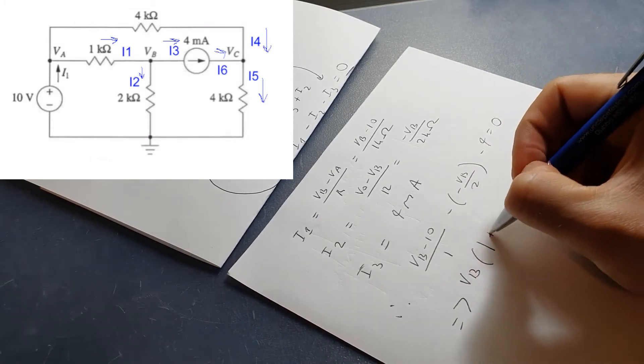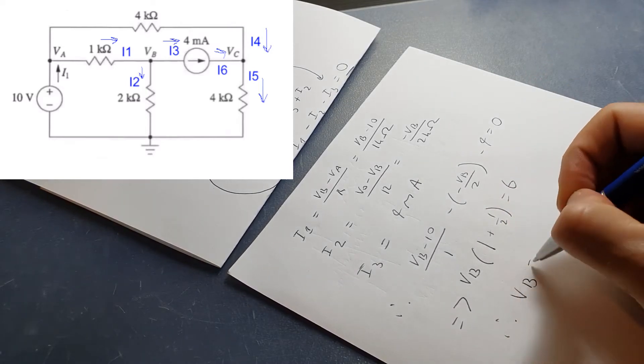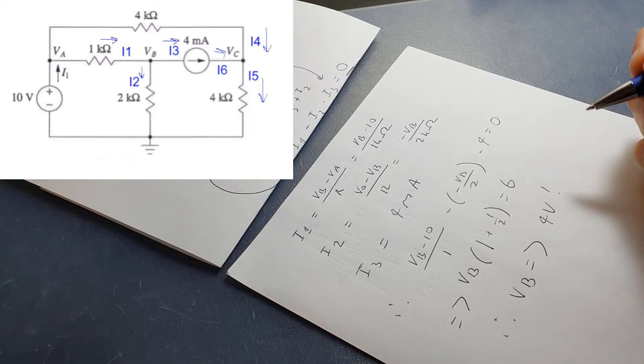Look, VB outside of 1 plus a half equals 6, which means that VB, once we solve the equation, equals 4 volts. We did it!